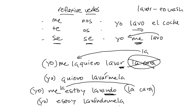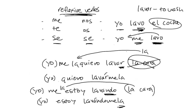So the thing to remember with reflexive verbs is that you use these reflexive pronouns to show who is receiving the action of the verb. A verb can be reflexive or not reflexive, depending on whether you're using the reflexive pronoun. Yo lavo el coche — direct object, action goes that way. Yo me lavo — the action comes back to the subject.